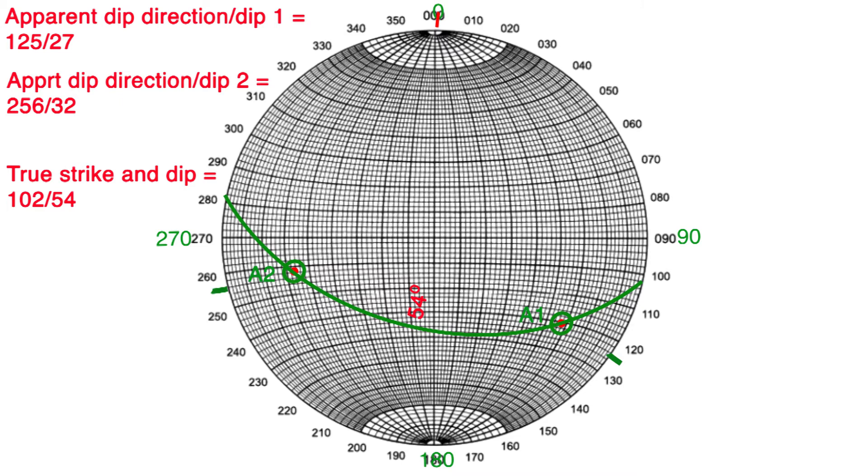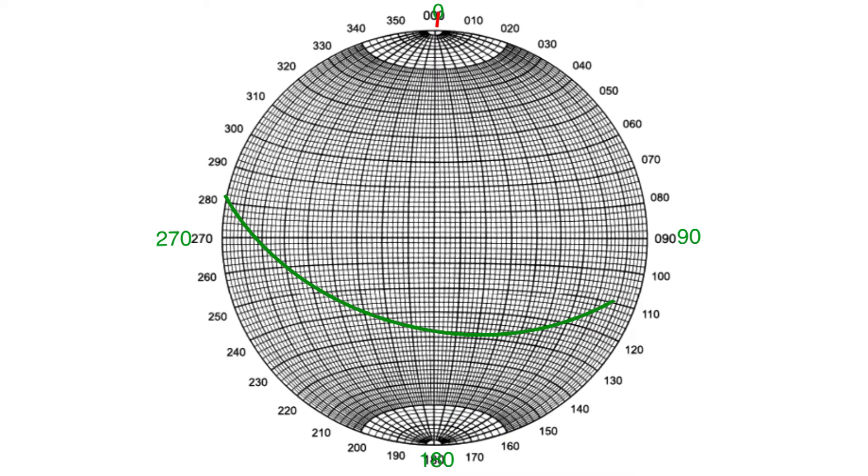Another linear feature is the intersection of two planes. Sterionets can help us figure the orientation of this line of intersection as well. Draw in the curves for your two planes, take the intersection point onto a cardinal line, mark the nearest cardinal point on the outer circle, count in to get the angle, and note that, and rotate back to proper orientation to get the trend and plunge of the line made by the intersection of these two planes.